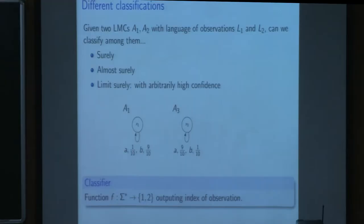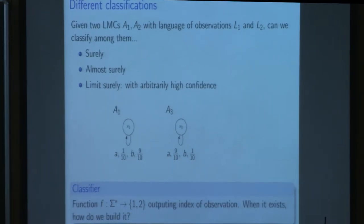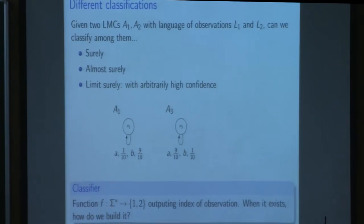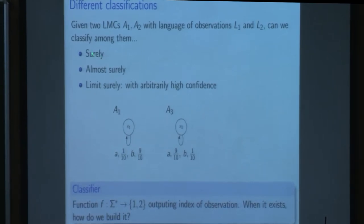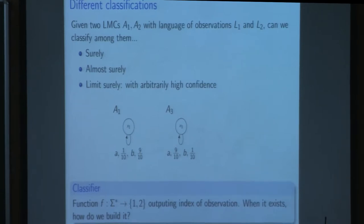So indeed, when I say I will use the term classifier, a classifier is nothing but for any finite word I will just say whether it belongs to one or zero. Indeed, classifier means that it can make an error. It need not be a sure classifier. So the question is, when does a classifier exist and when it exists, how do we build it? So when I say classifier, it could be a classifier which satisfies this definition, second definition or the third definition.